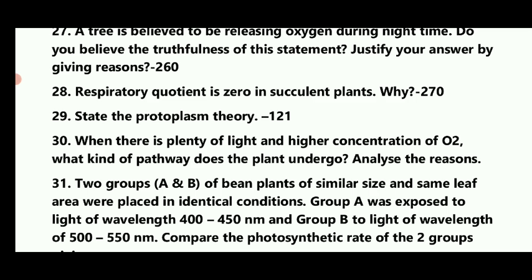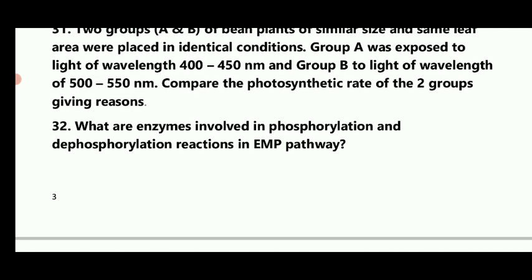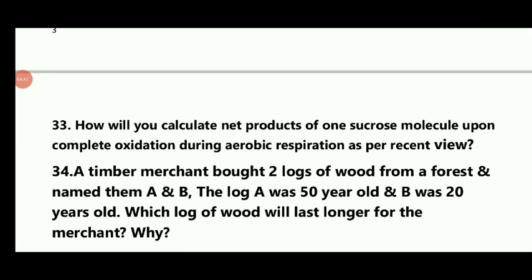When there is plenty of light and higher concentration of O2, what kind of pathway does the plant undergo? Analyze the reason. Question 30: Two groups of pea and bean plants of similar size with same leaf area were placed in identical conditions. Question 31: What are the enzymes involved in photophosphorylation and dephosphorylation reactions in the EMP pathway?